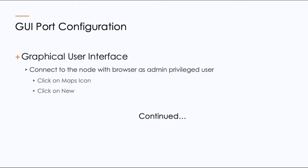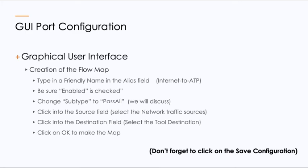To configure via the graphical interface, you log into the interface with your browser and log in as an admin privileged user. You'll click on the Maps icon and click New. You're going to give it a friendly name — make it something easy to understand what the map is. We'll call ours 'internet to ATP.' Make sure the map is enabled, change the subtype to pass all, click into the source field to populate your sources, click the destination field, and click OK to build the map. Don't forget to save the configuration, because if you reboot the appliance without saving, you'll lose the maps you've built.